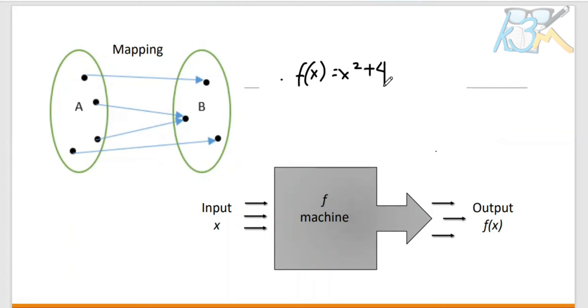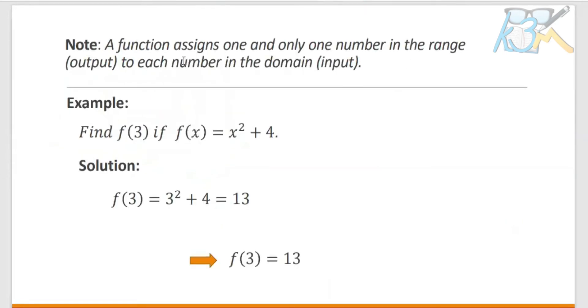This function can be thought as a function that accepts an input X. So we substitute any value in this variable X, then square it and add 4 to produce an output Y equals X squared plus 4. No matter how you choose to think of a functional relationship, it is important to remember that a function assigns one and only one number in the range to each number in the domain.